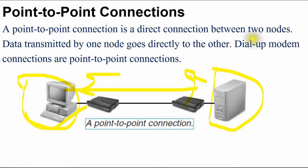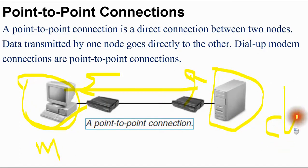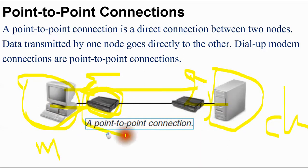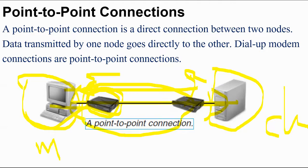Dial-up modem connections are point-to-point connections. For example, this is in Mumbai or Chennai — any other location. You will use one modem on this side and one modem on the other side. Or you can remove the modems and connect one cable directly, and that will be your point-to-point connection. Very simple — a direct connection between two nodes is known as a point-to-point connection.